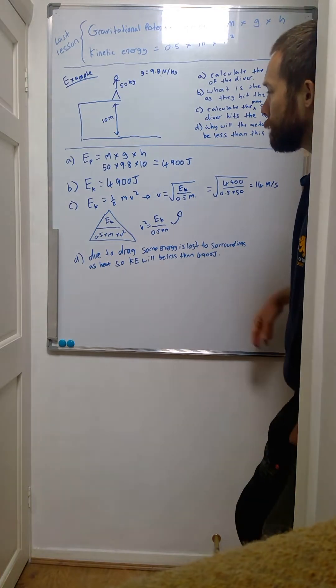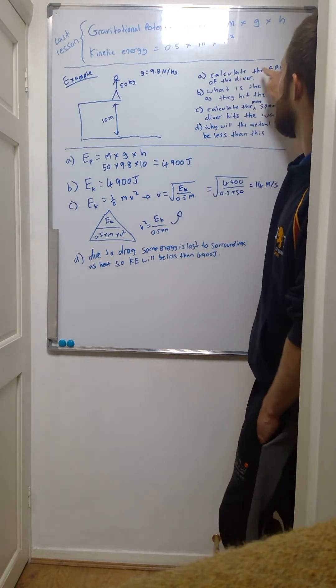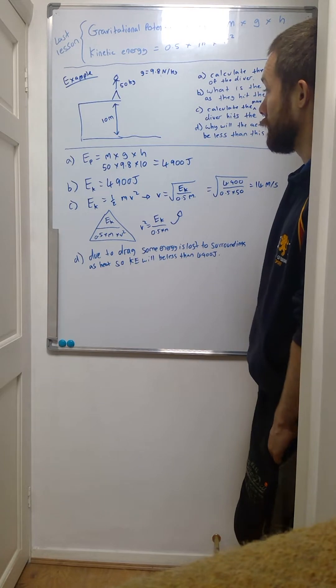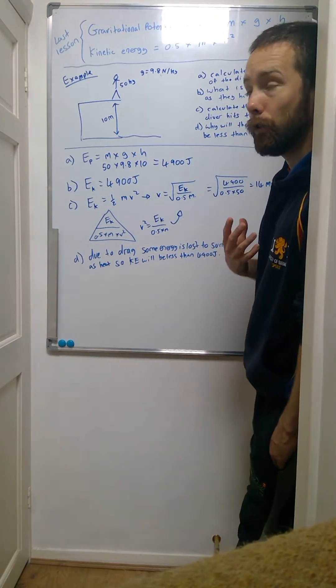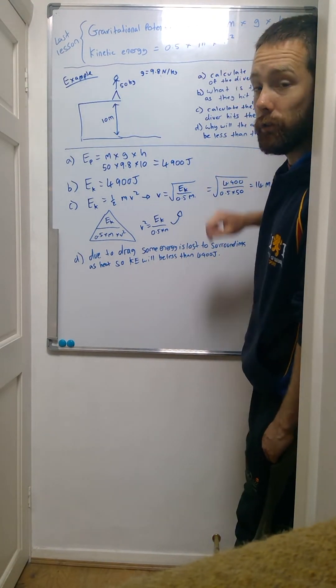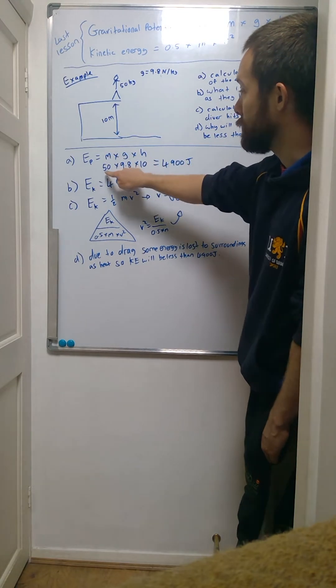So first of all, we're looking at the first one: calculate the gravitational potential energy of the diver. Nice and straightforward. We're going to use our gravitational potential energy equation from the top here: mgh.